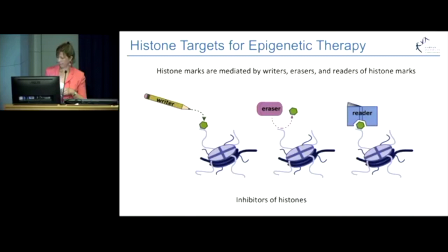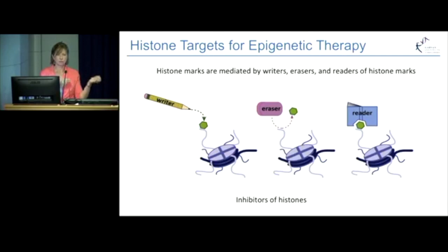Turning our attention now to histone inhibitors: the histone marks on top of the histones are brought about by proteins, and we have a number of different players. Writers will add a mark to the histones, erasers will remove the mark, and readers bind to these marks and interpret them on top of the histone tails. Of course, the writers, the readers, and the erasers all provide us with opportunities to target these protein players, giving us inhibitors of histone changes.